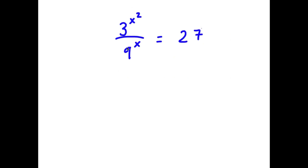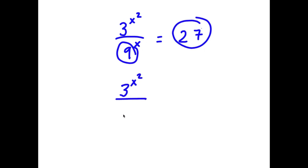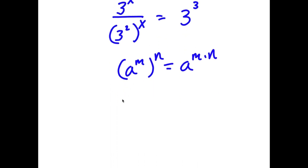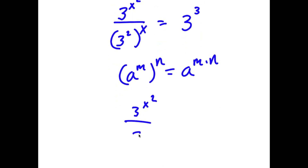So in this problem, I have 3 to the power of x squared over 9 to the power of x is equal to 27. I'm first going to start by rewriting 9 as 3 squared and 27 as 3 cubed. So now I have 3 to the power of x squared over 3 squared to the power of x is equal to 3 to the power of 3. Using the rule a to the power of m to the power of n equals a to the power of m times n, 3 squared to the power of x becomes 3 to the power of 2x.